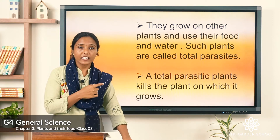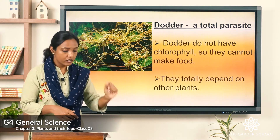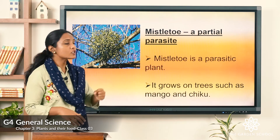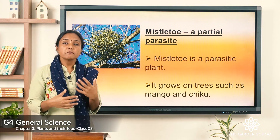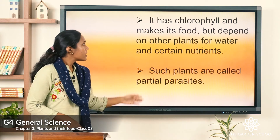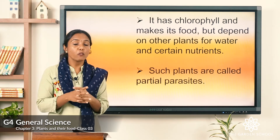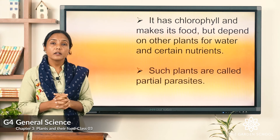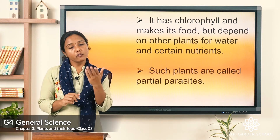As we saw in the picture, dodder survives by killing the plant on which it grows. Now, the other type of plant that does not make its own food is mistletoe. Mistletoe is a parasitic plant and it grows on trees such as mango and chiku. These are partial parasites — they have chlorophyll and make their own food, but they still depend on other plants for water and certain nutrients.